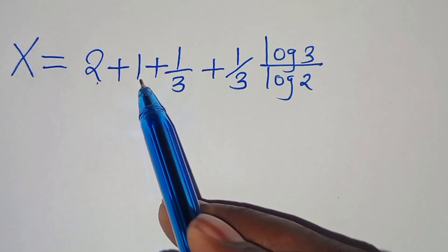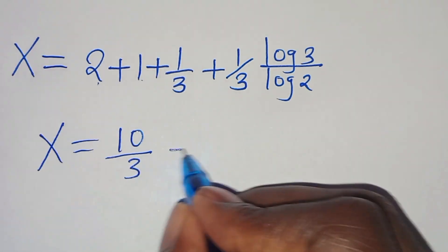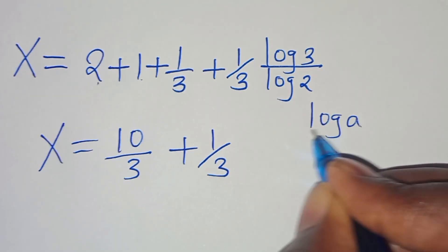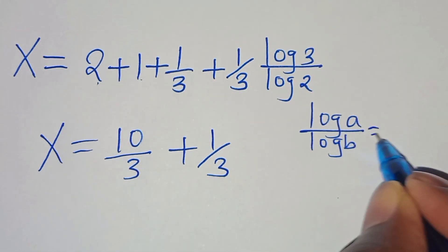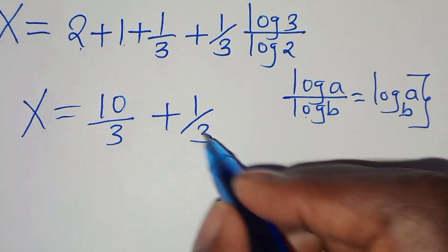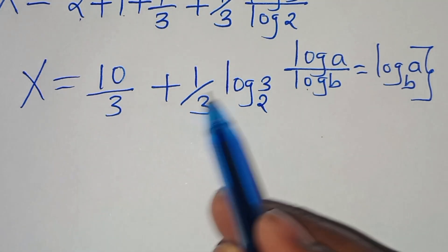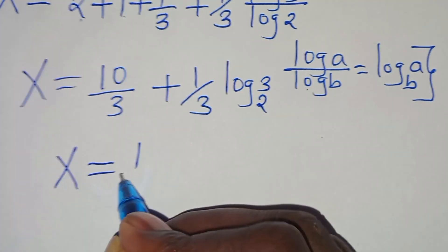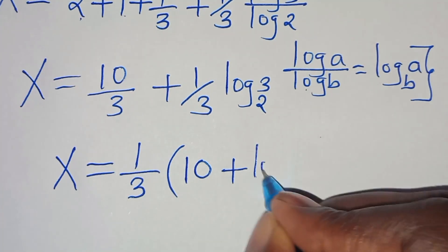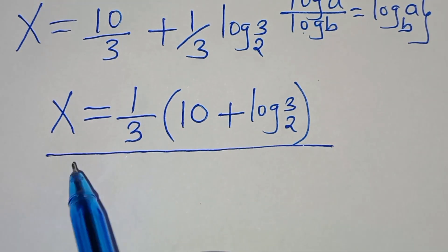So we have 2 plus 1 equals 3, then 3 plus 1/3, which equals 10/3. And (1/3)·log(3)/log(2) is in the form log(a)/log(b), which can be expressed as log base b of a. Applying this property, we get x equals (1/3)(10 plus log base 2 of 3). This is the value of x.